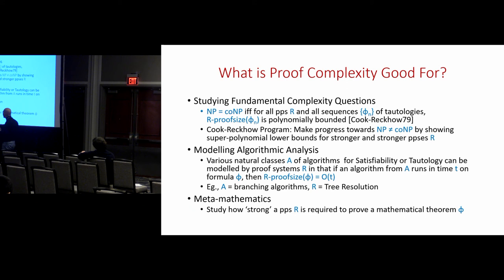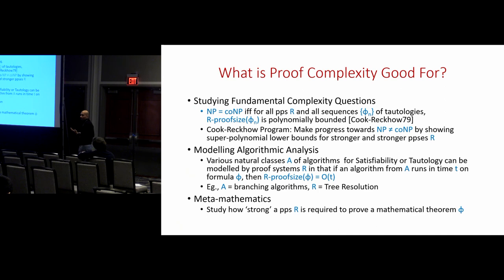One example of this correspondence is branching or backtracking algorithms for satisfiability: you choose a variable, set it to zero, explore that branch, and if no satisfying assignment is found you backtrack and set it to one. That class of algorithms essentially corresponds to tree resolution, a standard and fairly weak proof system. The third reason for studying proof complexity is metamathematics: given a theorem, you'd like to know what strength of proof system is required to prove it.